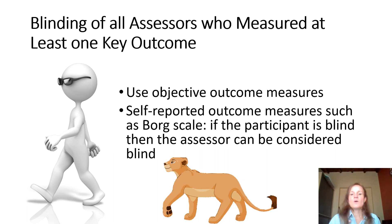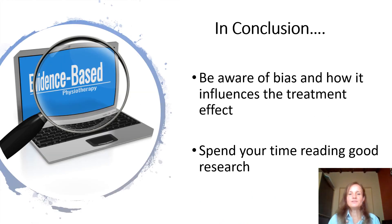Also, using objective outcome measures is important, such as runners running with inertial sensors to measure their speed rather than recording it from a stopwatch. Now that you know what the major influences of bias in trials are, be aware of bias and how it influences the treatment effects. Spend your time reading good research.